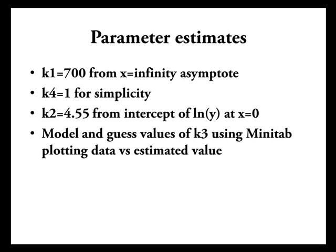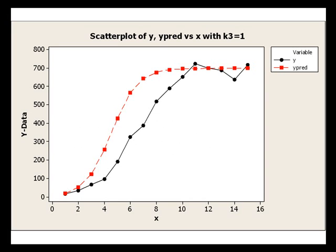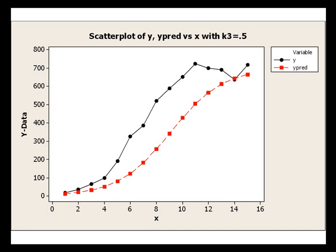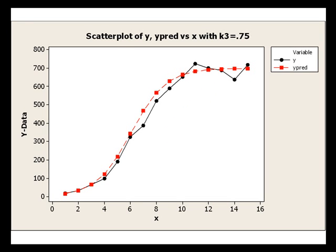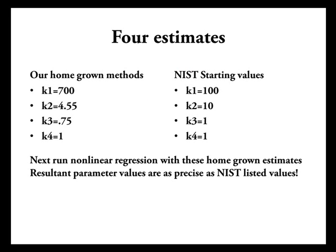So, now what we're going to do is we're going to say, let's model and guess values of k3 using the Minitab plotting data versus the estimated value. So, let's just pick out of our hat that k3 equals 1, nice round starting number. And when I plot the predicted values, I can see that it's got the nice shape and sort of the same asymptote, but we're off a little. So, let's see. Let's go k3 equals 2. Whoops, I went in the wrong direction. So, let's go k3 equals 1 half. Oh, I went the wrong direction on the other side. Well, let's split the difference between 1 and 0.5 and go 0.75. Oh, that's pretty darn good. So, that's good enough starting point.